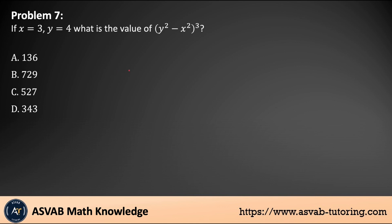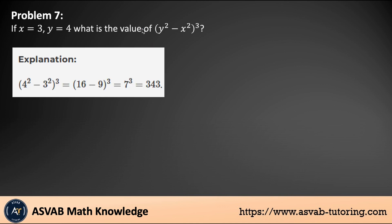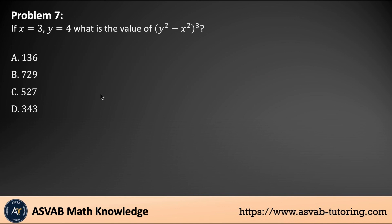Problem number seven: if x equals 3 and y equals 4, what is the value of (y² minus x²)³? Just plug in the values: 4 squared is 16, 3 squared is 9, so 16 minus 9 is 7, and then 7 to the third power. Remember: 7 to the third power means 7 times 7 times 7 — not 7 times 3. People often make that mistake. 7 times 7 times 7 equals 343. The answer is 343, option D.